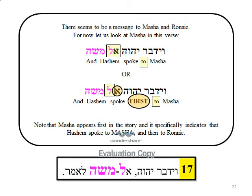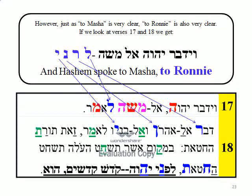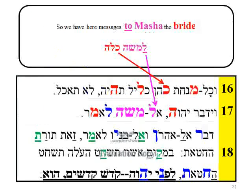There seems to be a message to Masha and Roni. Let us look at Masha in this verse: And Hashem spoke to Masha — Hashem spoke first to Masha. Note that Masha appears first in the story, and it specifically indicates that Hashem spoke to Masha and then to Roni. Just as 'to Masha' is very clear, 'to Roni' is also very clear. If we look at verses 17 and 18 we get: 'And Hashem spoke to Masha, to Roni.'